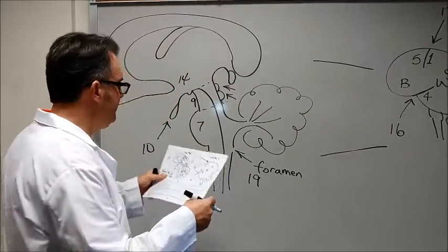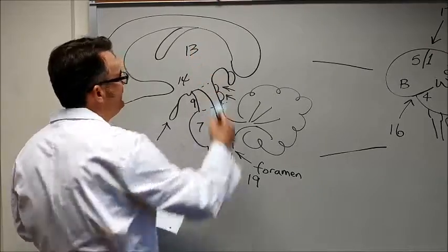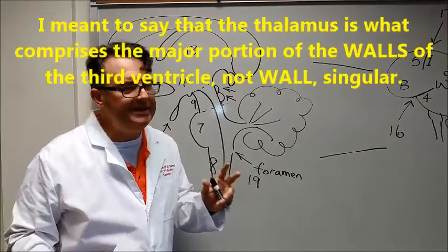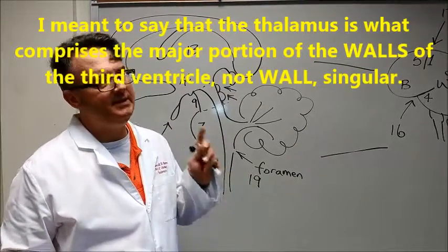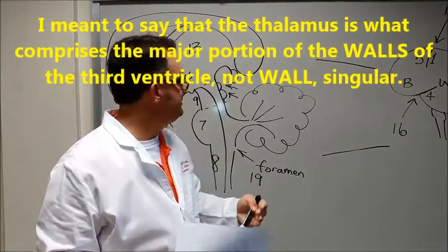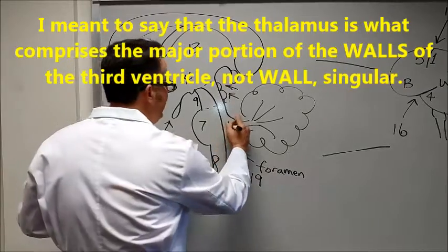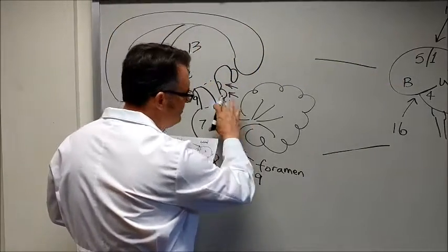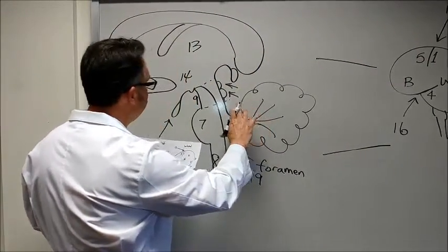The area directly above that, number 13, is the thalamus. Now while I'm thinking about it let me remind you that the thalamus is what makes the major wall of the third ventricle. By the way 18 is the fourth ventricle which we see in front of the cerebellum.